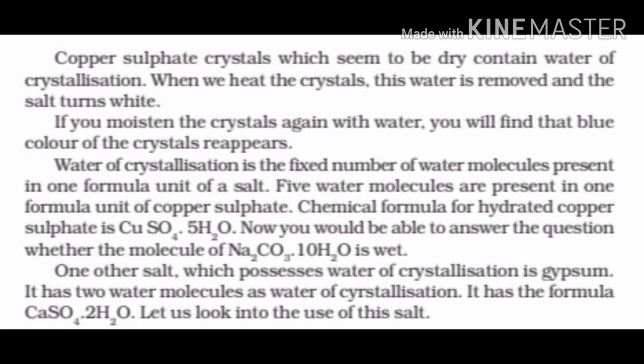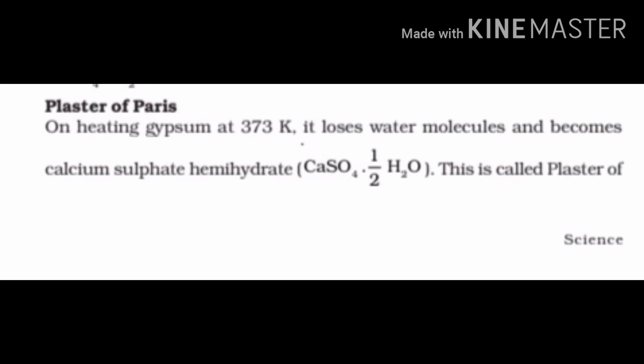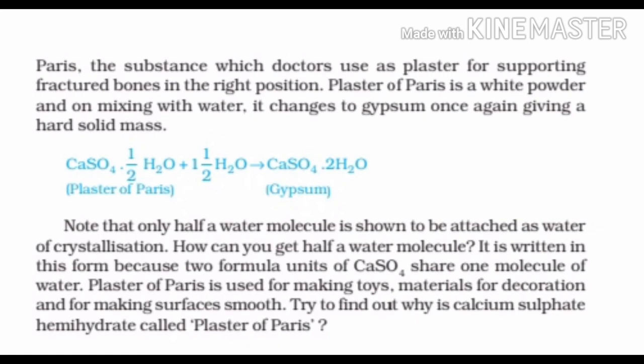One other salt which possesses water of crystallization is gypsum. It has the formula calcium sulfate with two molecules of water, CaSO₄·2H₂O. On heating gypsum at 373 Kelvin, it loses water molecules and becomes calcium sulfate hemihydrate, that is calcium sulfate with half a molecule of water. This is called plaster of Paris. Plaster of Paris is a white powder used by doctors for supporting fractured bones, making toys and decorative materials, and for smoothening surfaces.